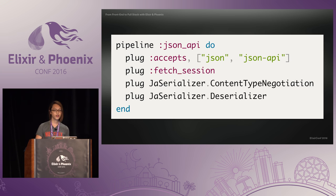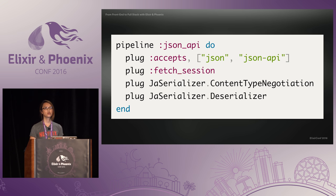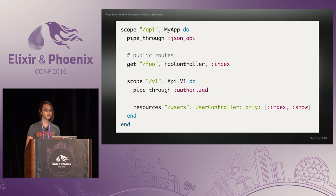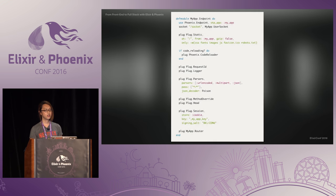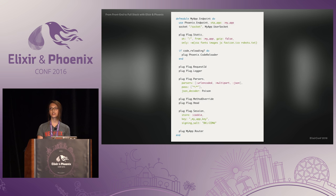Plug pipelines in the Phoenix router are very composable. For example, let's add another pipeline for our API to follow the JSON API specification — a shared convention for building JSON APIs — using the JAWS serializer library. We can make two scopes in our router: the v1 scope nested inside the API scope. The foo route in the API scope will only go through that pipeline, while the user routes will go through both the JSON API and the authorized pipeline since it's nested inside. The endpoint module is actually just a big plug pipeline, so everything from logging, JSON parsing, to adding headers and cookies all happens there before the connection even hits your router.